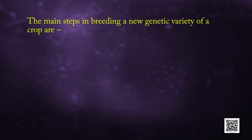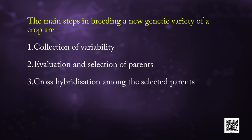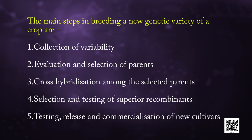Plant breeding programs are carried out in a systematic way worldwide, both in government institutions and commercial companies. The main steps in breeding a new genetic variety of crop are: 1) collection of variability, 2) evaluation and selection of parents, 3) cross hybridization among selected parents, 4) selection and testing of superior recombinants, and 5) testing, release and commercialization of new cultivars.